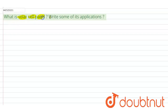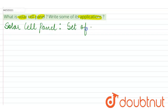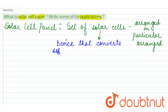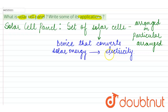The question is: what is a solar cell panel, and write some of its applications. A solar cell panel is a set of solar cells that are specifically arranged in a particular order. Solar cells are devices that convert solar energy into electrical energy.